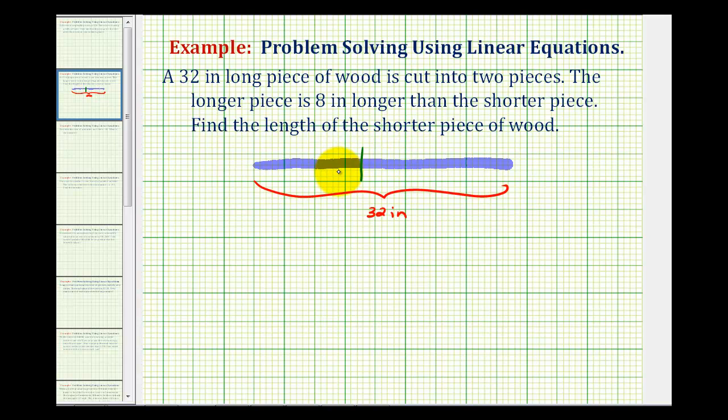We don't know the length of either piece so we're going to have to use a variable. So if we call the length of the shorter piece x and the longer piece is eight inches longer, we could represent this length as x plus eight, where the units of both of these would be in inches.